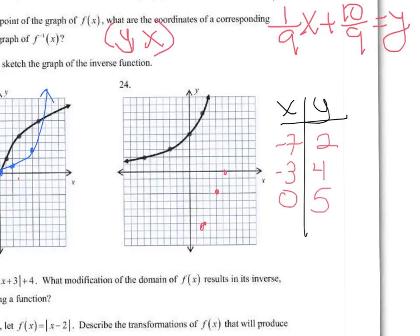Hmm. I think I counted wrong. 1, 2, 3, 4, 5. 1, 2, 3. Oh, this should be a 3. So this point should really be at 3, negative 3. And then 5, 0. And notice how there's arrows on both ends. So there is a sketch of our inverse.